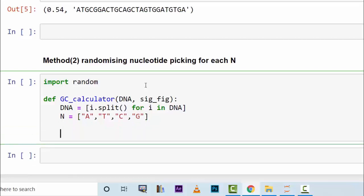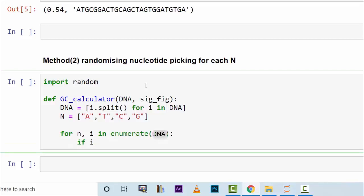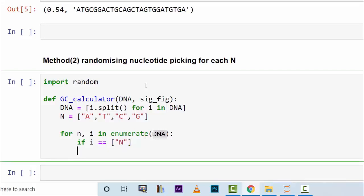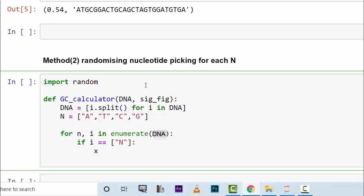Now we have to loop the DNA to first find the N's and then change the N to one of those four nucleotides randomly. So we say for n and i in enumerate DNA, if i is equal to N. So if i is equal to N, but this one is a list so we have to be very careful when writing this kind of loop and if statement. If it's equal to this, what should we do?